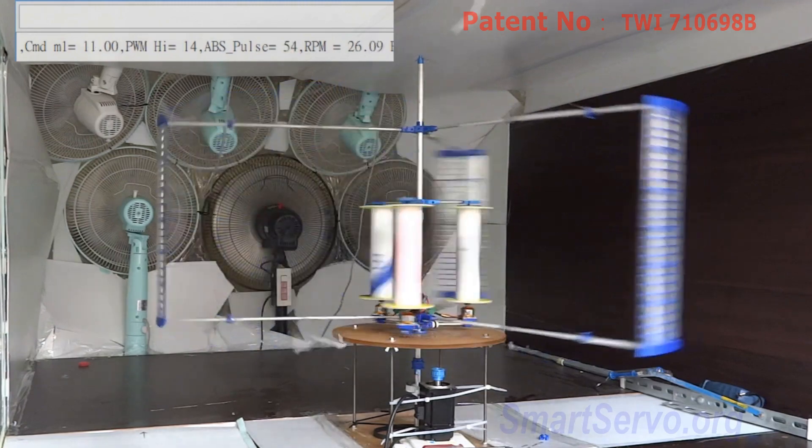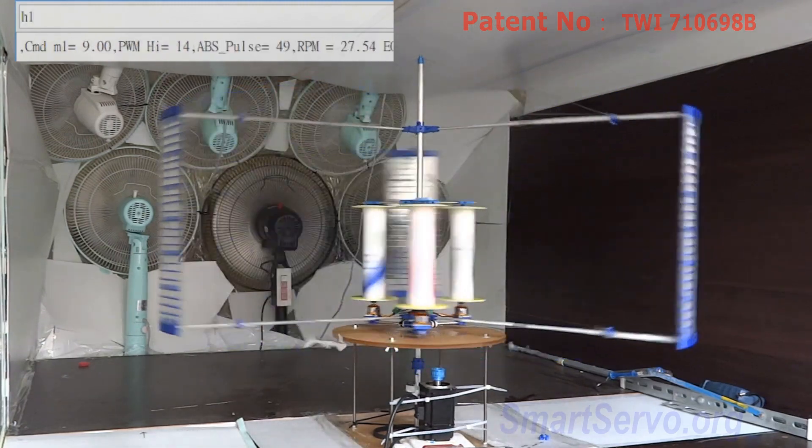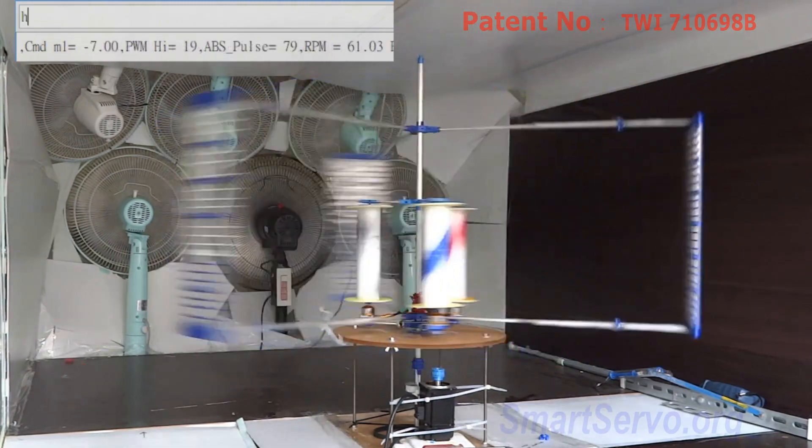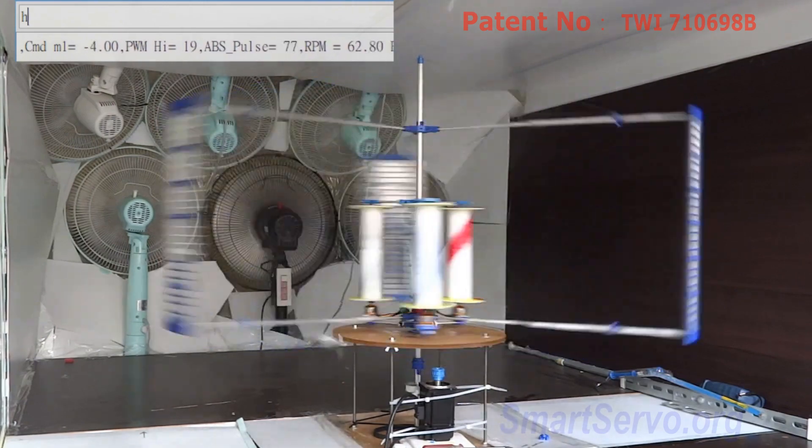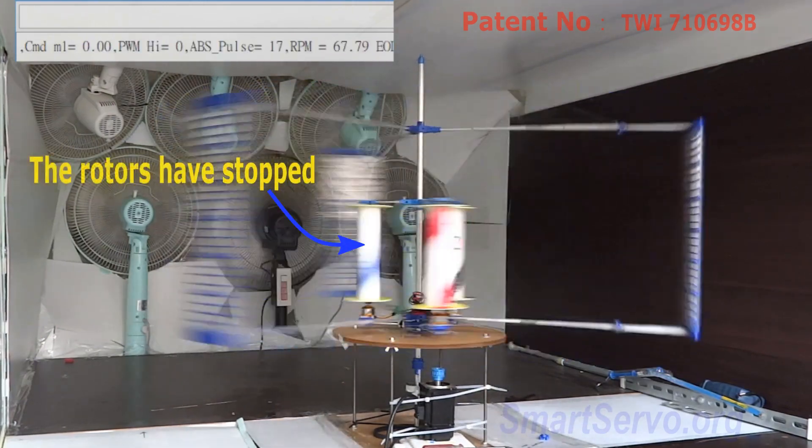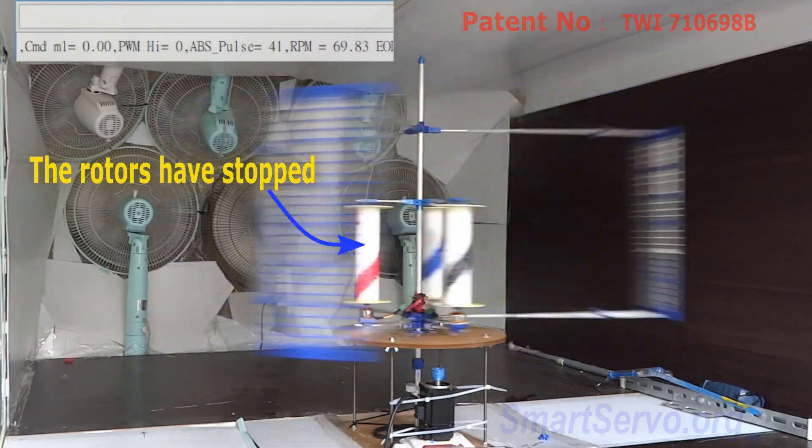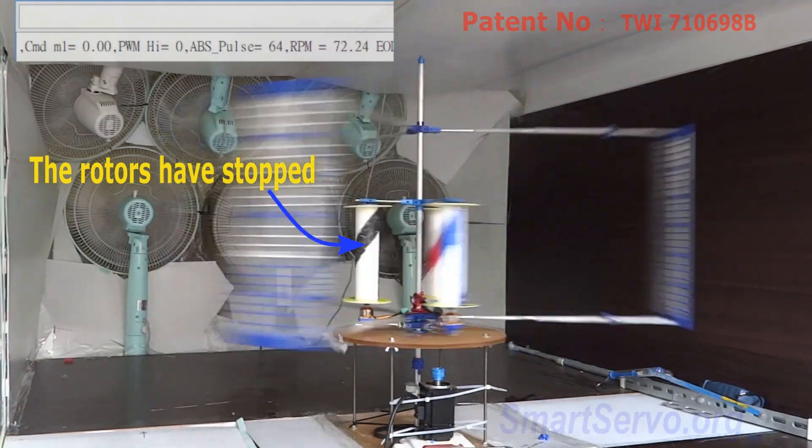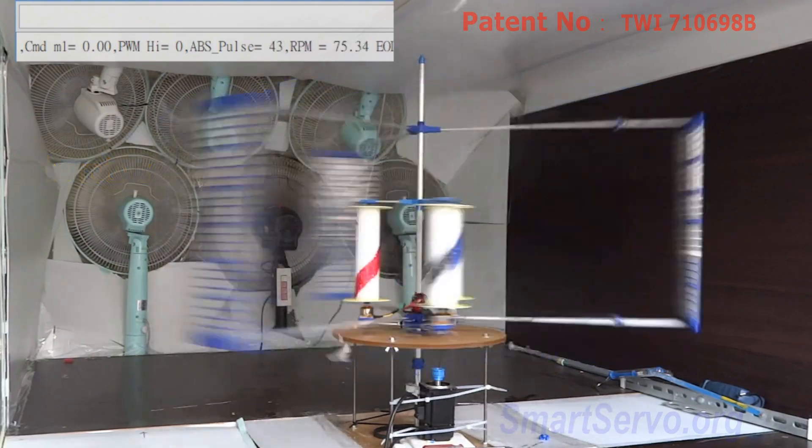Continuing to accelerate. After a while, the wind turbine speed reaches 60 RPM. At this time, turn off the motor to stop rotation of the rotor. Will this wind turbine stop? The wind turbine did not slow down, instead, it continued to accelerate.